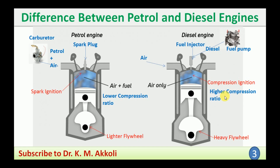The compression ratio is the ratio between the total volume to the clearance volume. The clearance volume is the remaining volume when the piston reaches top dead center. That ratio is called the compression ratio, and it plays an important role in determining power output. This difference in lower versus higher compression ratio is the third difference.